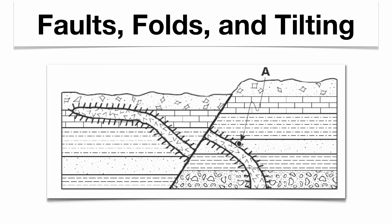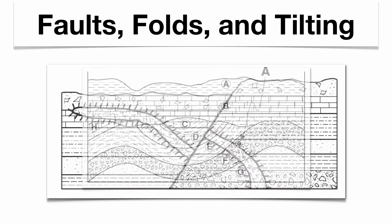Here's a Regents diagram showing an intrusion — you can see contact metamorphism around the whole thing — and a fault. The intrusion is older than the fault because the intrusion is broken just like the other rock layers. If the question asked what rock formed at point A, which is contact metamorphism of sandstone, the answer would be quartzite. Also note the folding underneath the horizontal layers — that deformation must be included in your sequence.